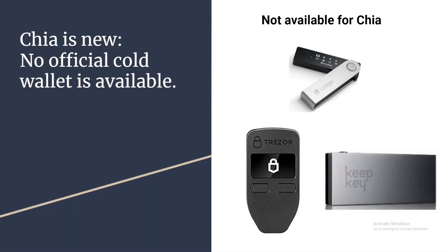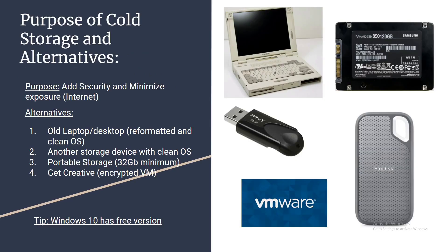One thing we could do to protect ourselves is farm to a cold wallet. Unfortunately Chia is still kind of new, so there are no official cold wallets like the Trezor, the Ledger Nano, or others that you can use for Bitcoin or Ethereum. The purpose of a cold wallet is to add security and minimize exposure, which means you don't want to connect the cold wallet to the internet.